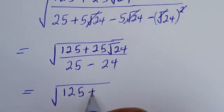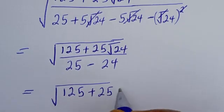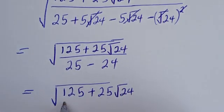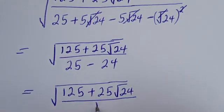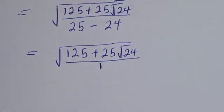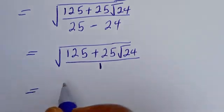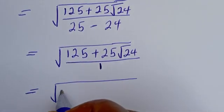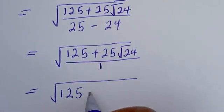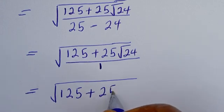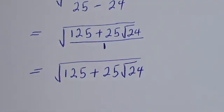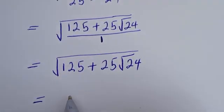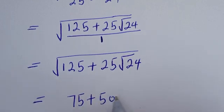We have square root of 125 plus 25 plus 25 root 24, all divided by 25 minus 24. The denominator becomes 1, so this is equal to square root of 125 plus 25 plus 25 root 24.